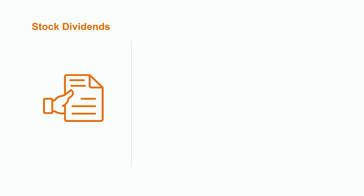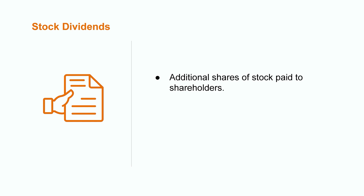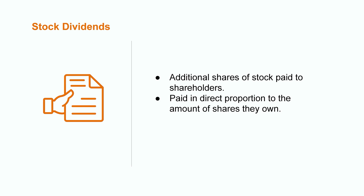A third category of capital distributions is the stock dividend. Instead of paying out a cash or property dividend, companies can choose to declare a stock dividend. This means that each shareholder will receive additional shares of the company's stock in direct proportion to their current ownership stake. For example, if a company decides to issue 100 stock dividends and you currently own 5% of the company's shares, you would receive 5 additional new shares.